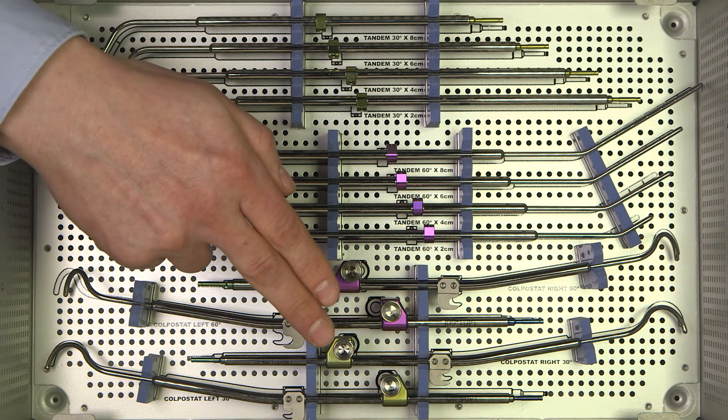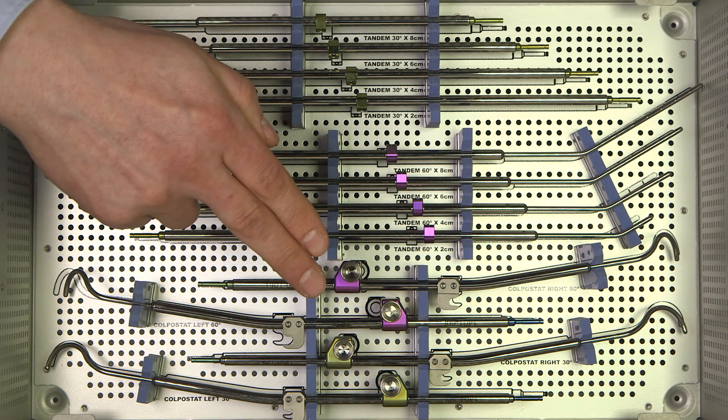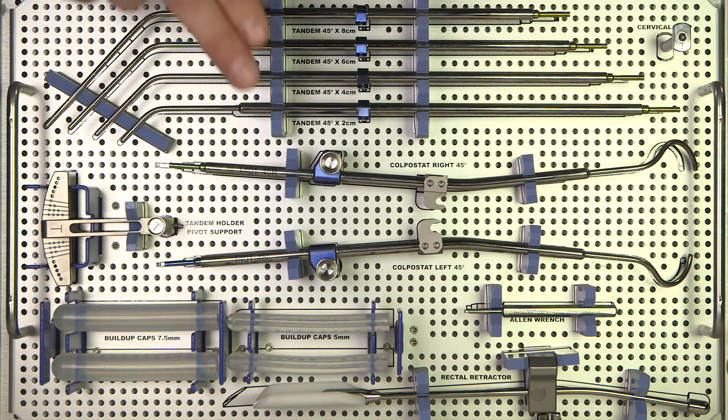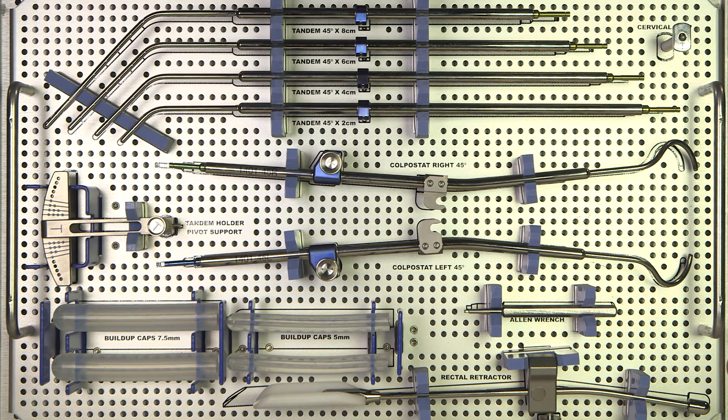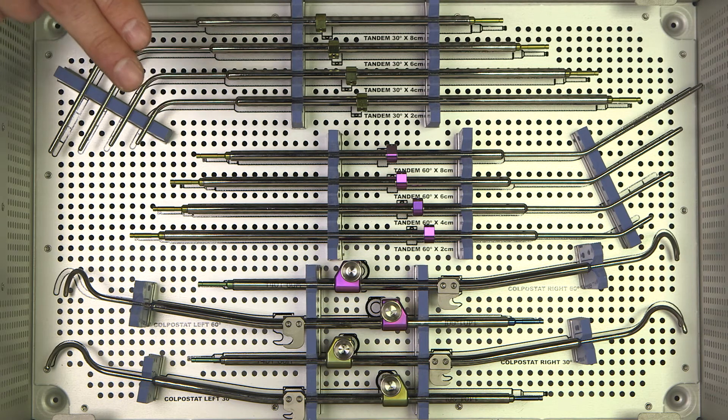Gold for the 30 degree split ring, purple for the 60 degree split ring, blue for the 45 degree split ring. The U-tubes are available in different lengths: 2, 4, 6 and 8 cm.